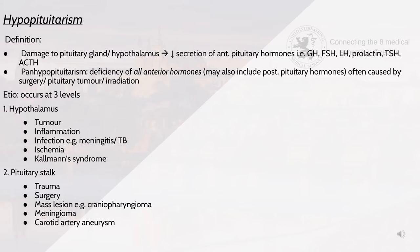The second level is at the pituitary stalk, which might be due to trauma, surgery, meningiomas, carotid artery aneurysms or mass lesions such as craniopharyngiomas. Craniopharyngiomas originate from the Rathke pouch and are found between the pituitary gland and the third ventricle floor. It's the most common childhood intracranial tumour, presenting as growth failure in childhood or amenorrhea, decreased libido, hypothalamic signs such as diabetes insipidus, hyperphagia and sleep disturbances in adults. It can be diagnosed via CT or MRI because calcifications can be seen.